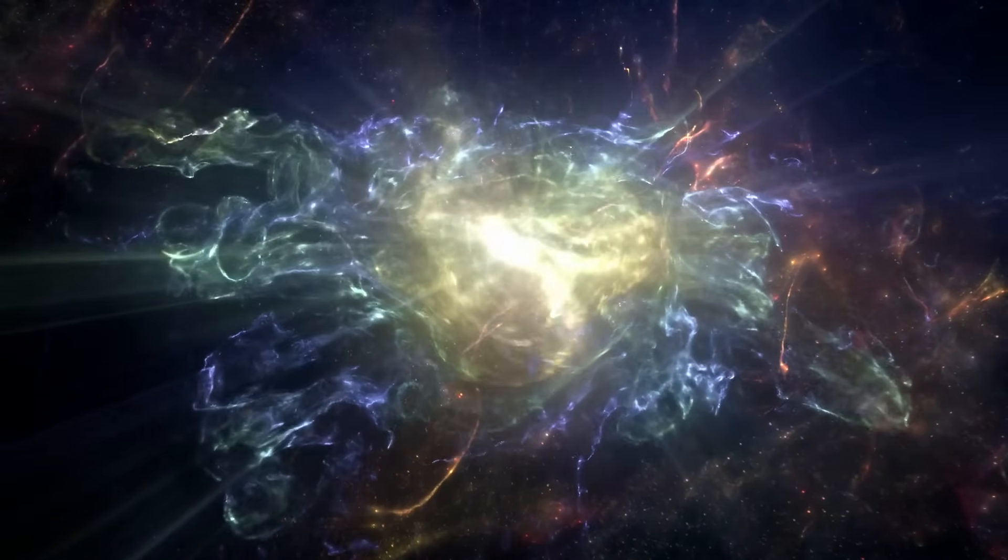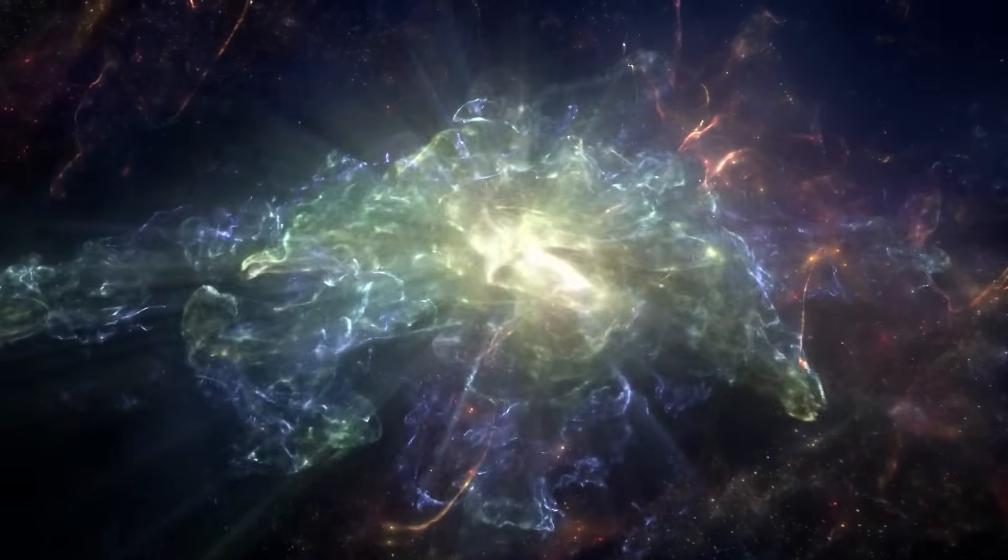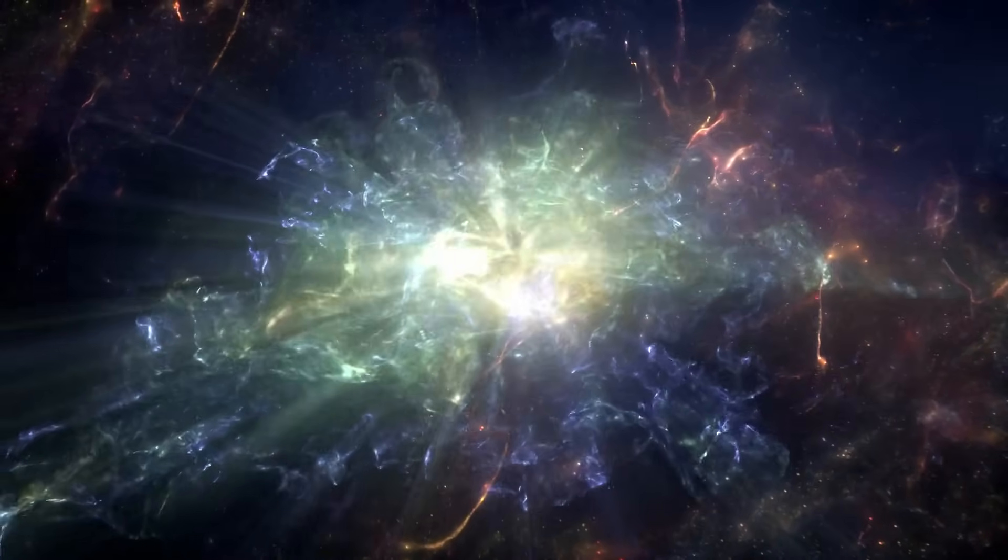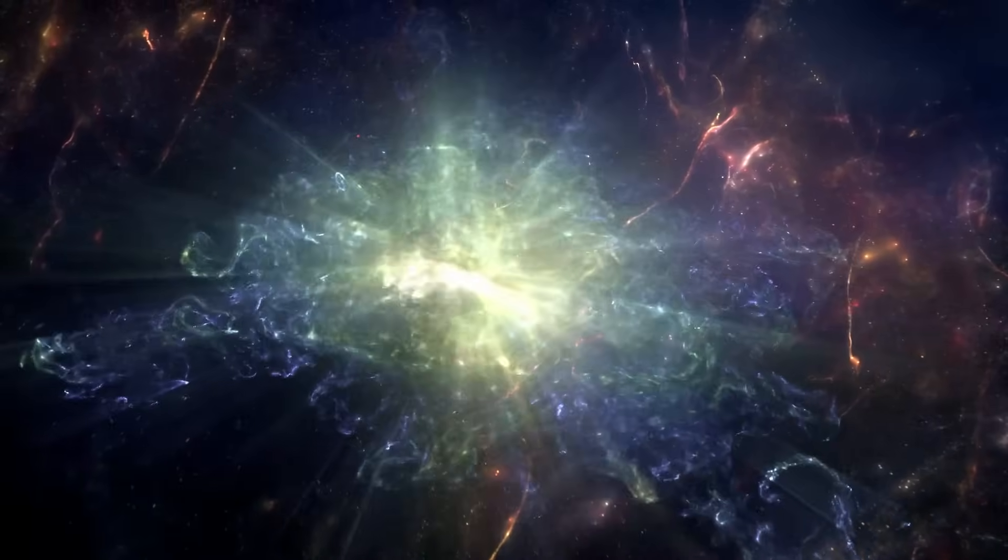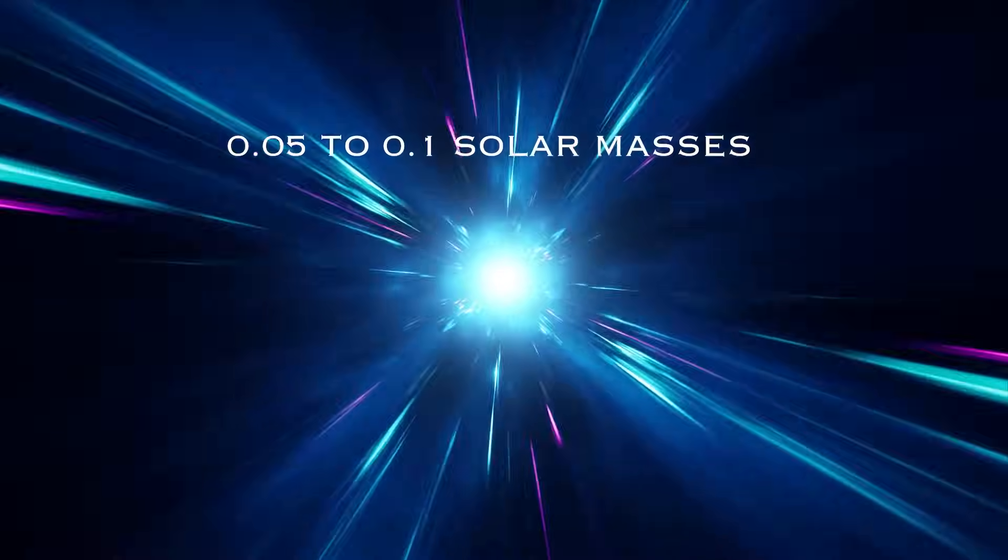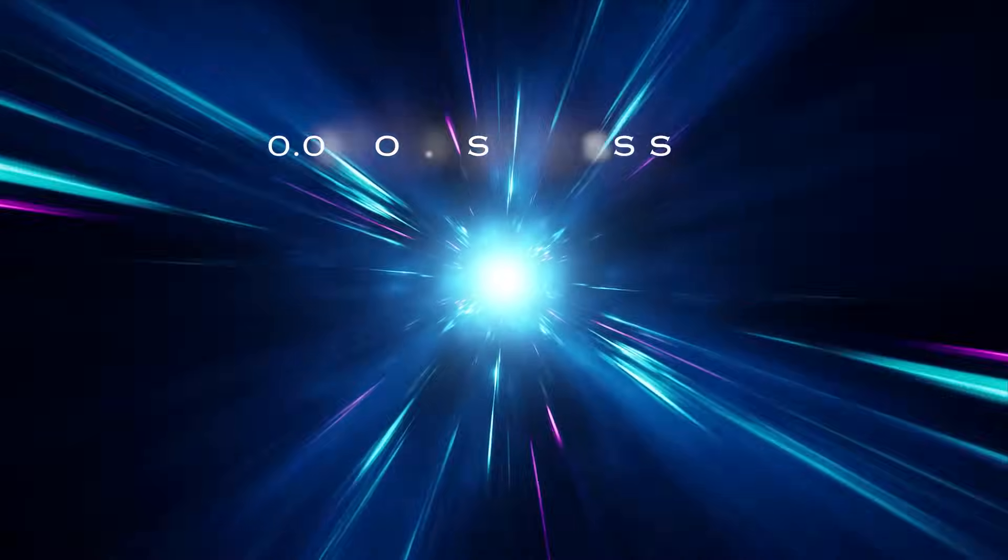By analyzing the orbital dynamics of the binary system with unprecedented accuracy, they determined that J0952-0607 sits just 0.05 to 0.1 solar masses away from the theoretical collapse threshold.